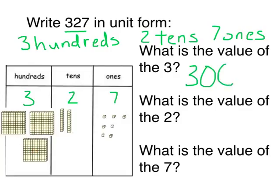It is a three in the hundreds place. What is the value of the two? Well, two is in the tens place, so two doesn't just stand for two. I have two tens. I can count by ten: ten, twenty. The value of the two is twenty because there are two tens.